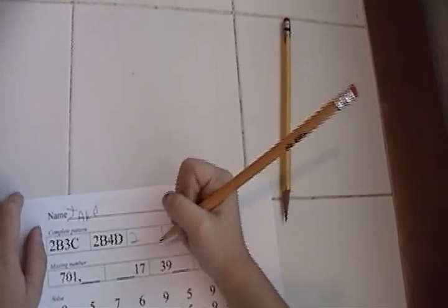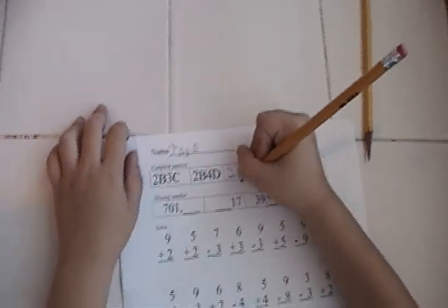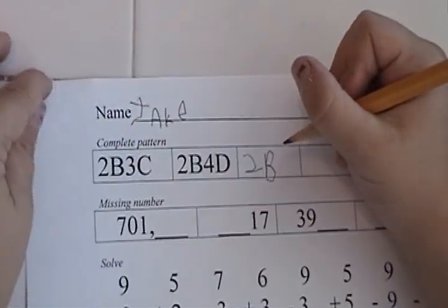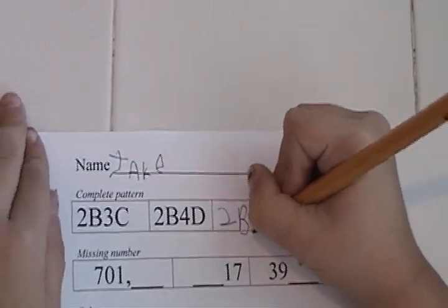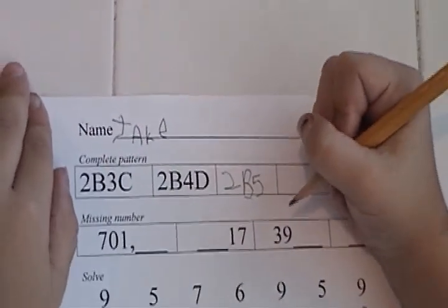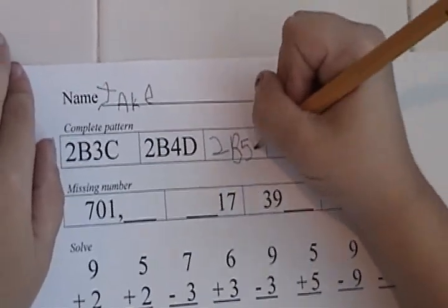Come on. B, 5, E. Mm-hmm. Okay, we'll put that to 39.